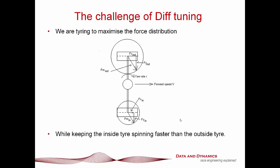But here, ladies and gentlemen, is our challenge of the diff tuning. What we want to do is we're trying to optimize the force distribution to get it in line to what the tires want while keeping the inside tire spinning faster than the outside tire. And that, ladies and gentlemen, is the real trick and where we're going to be expending an awful lot of our time, energy and resources to do that. So how do you do this using ChassisSim?